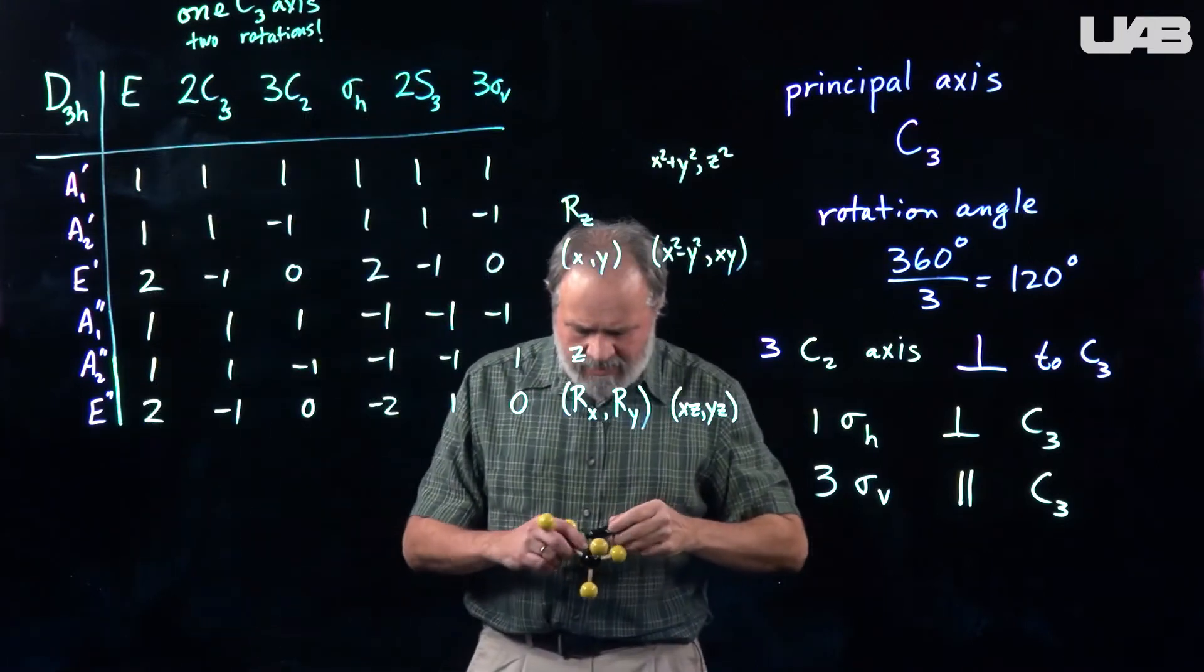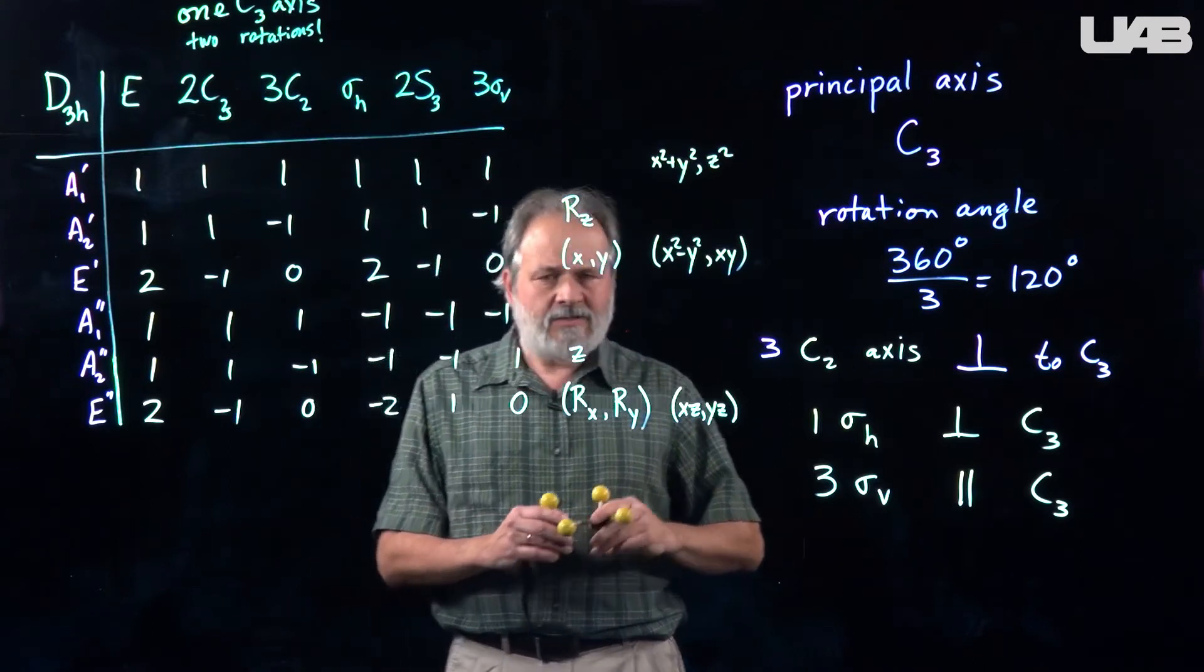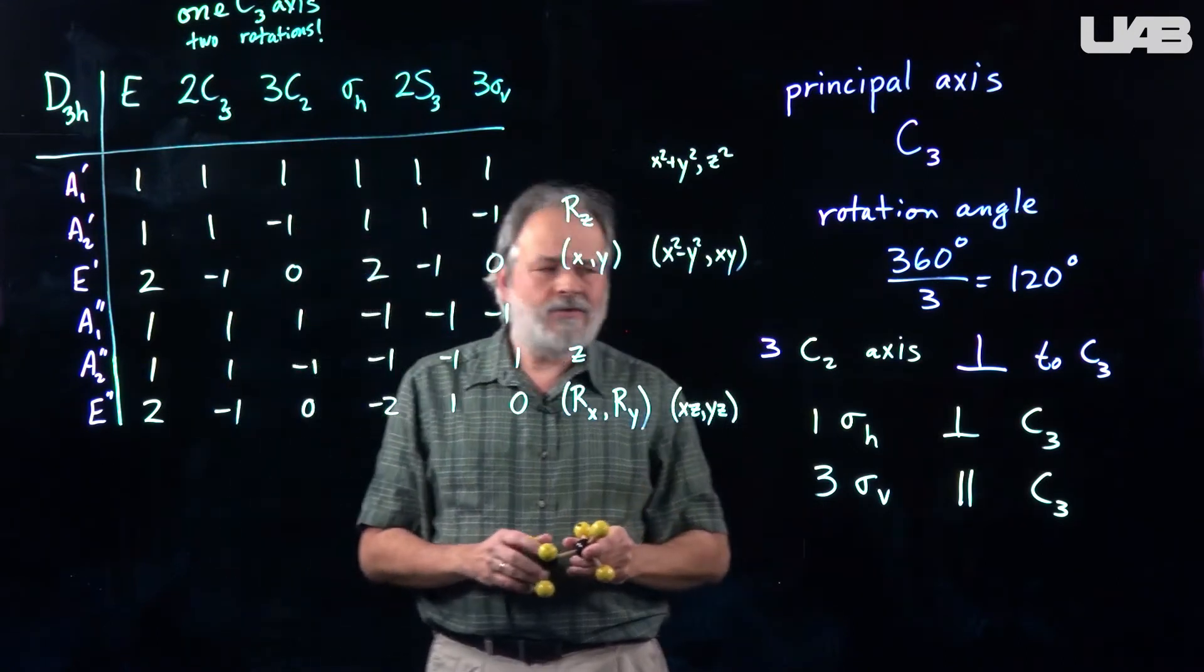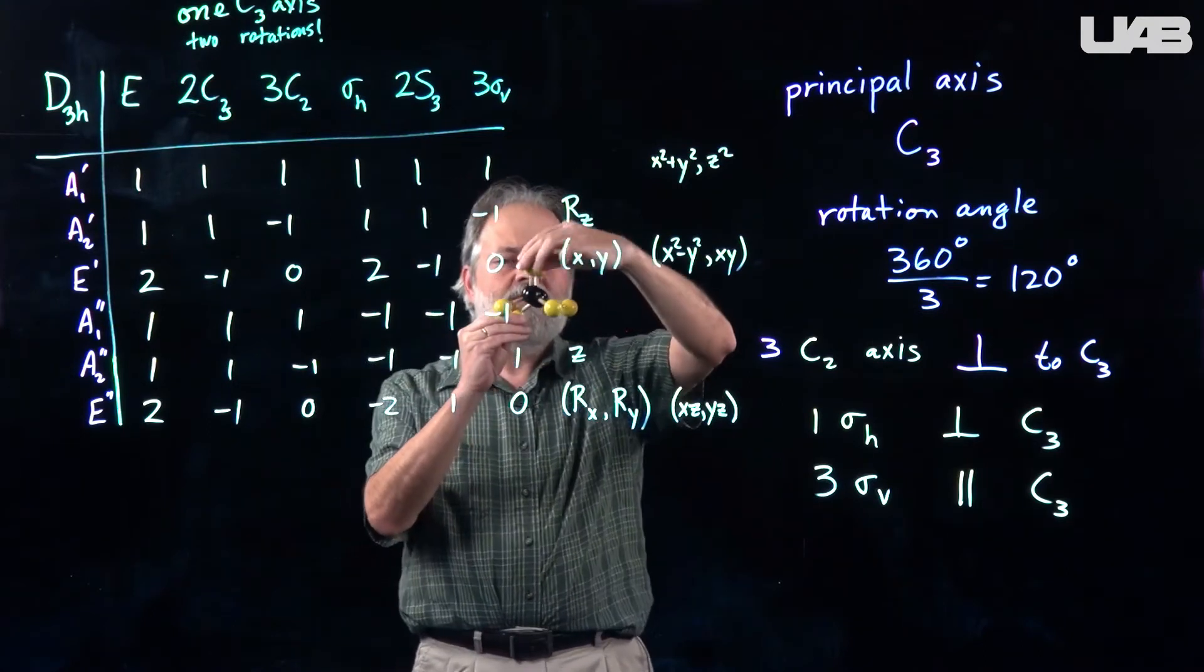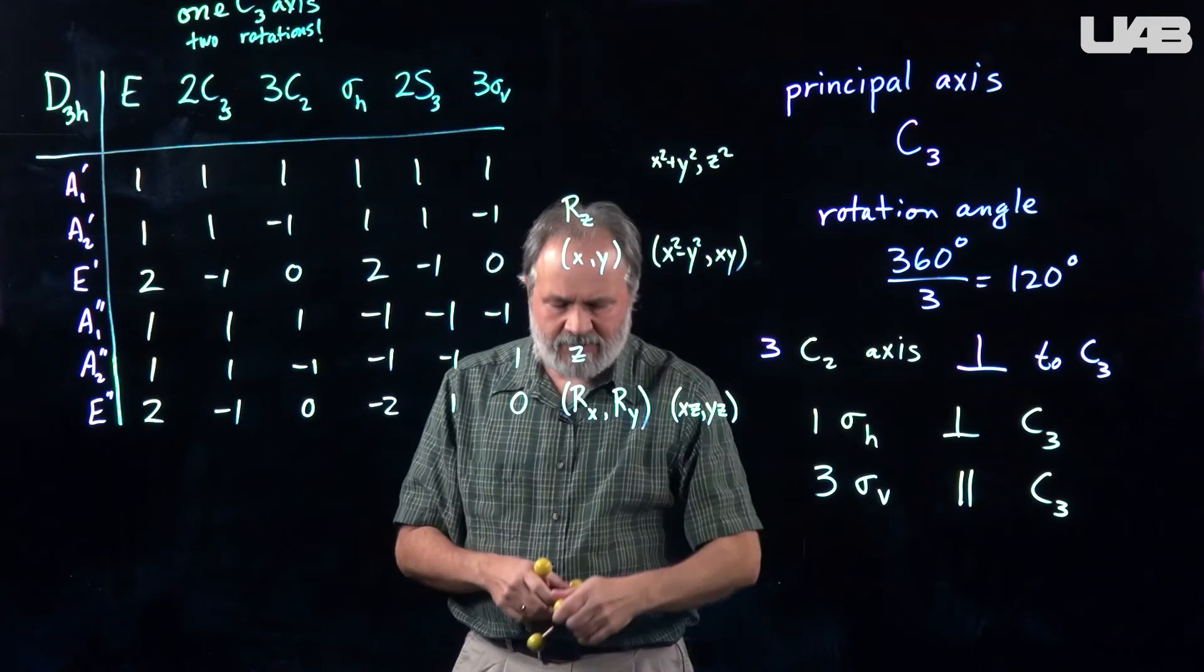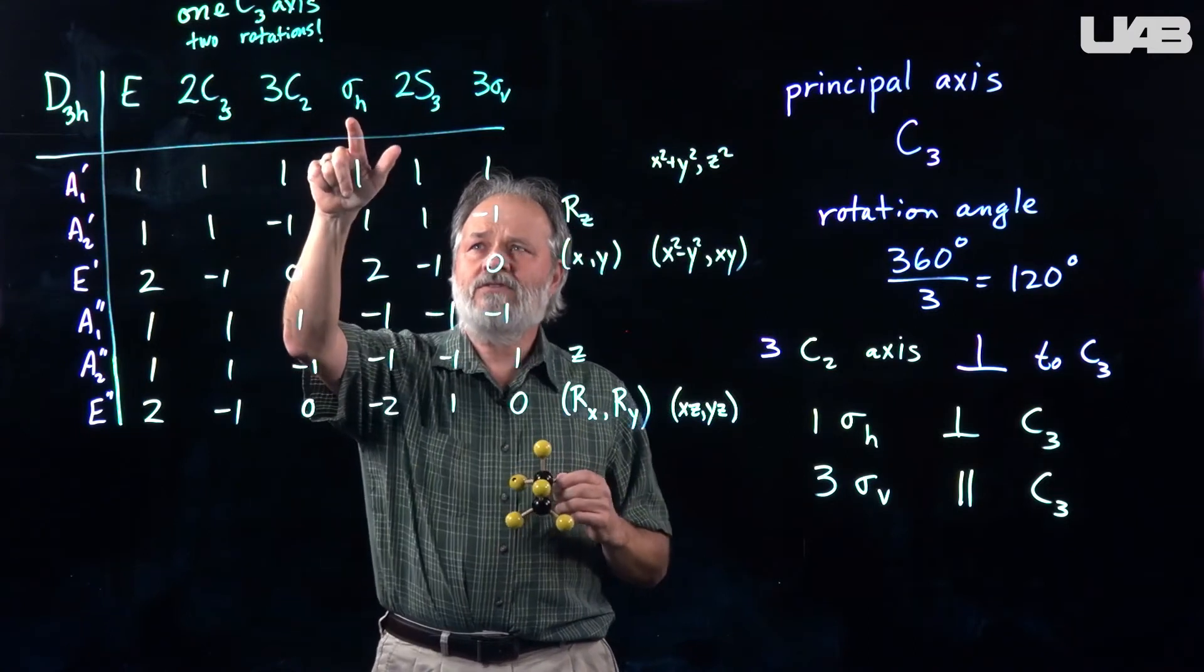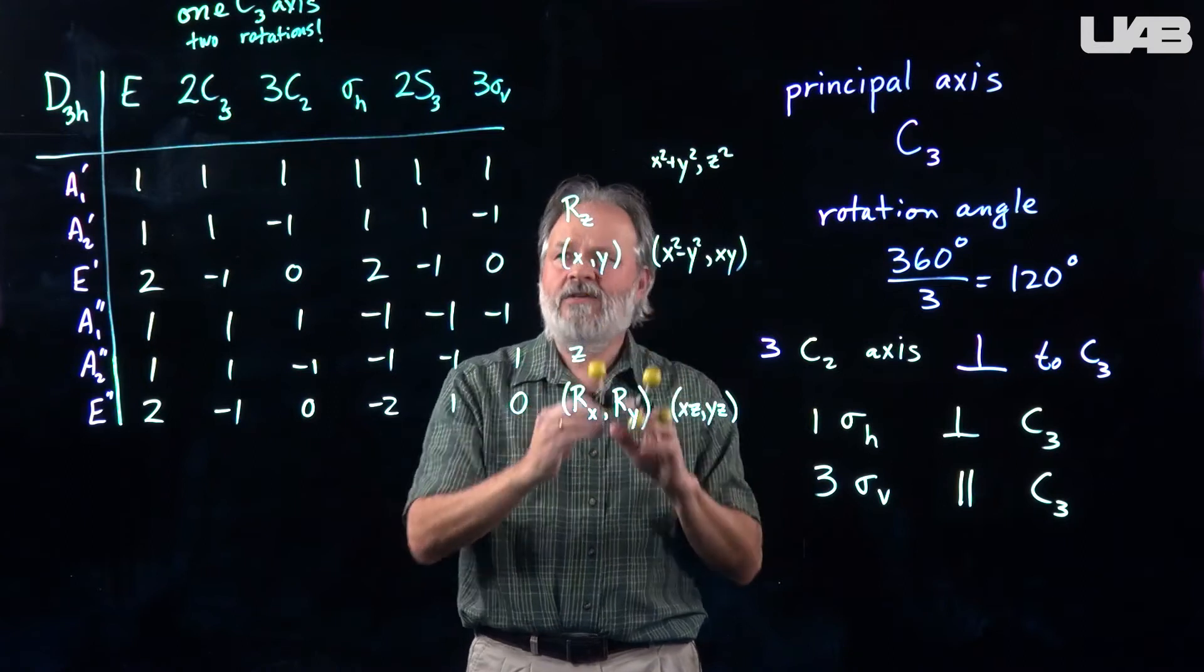So this is what you have to be careful of if you have a C3 or higher axis. There's more rotations than there are axes. Now this 3C2 refers to the fact that we have found three C2 axes. Now the C2 rotation is only 180 degrees. Rotate again and we're back to the original. So that's actually three axes and there's one rotation for each axis. Sigma H, there's only one of them. And that's the horizontal plane that cuts the molecule in half.